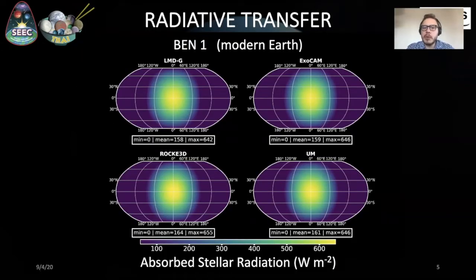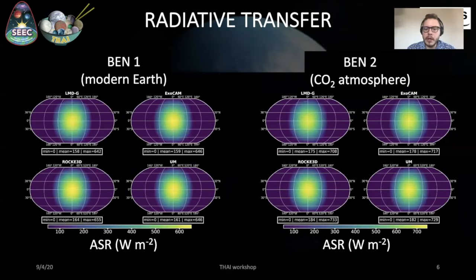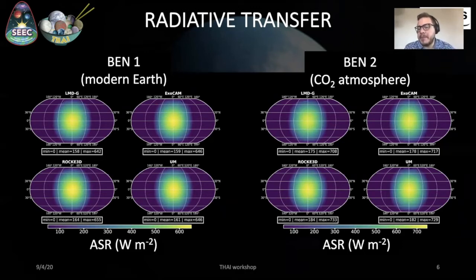Now let's show some results, starting with the BN1 cases. This plot shows contour maps for the four GCMs — LMDG, Exocam, UM, and Rocky 3D — of the absorbed stellar radiation. You can observe that the amplitude and shape of the distribution of the absorbed stellar radiation is very similar from one GCM to the other, by a difference of only a few watts per square meter. The results are also very similar for the BN2 case, where again shape and value of the absorbed stellar radiation are quite similar, which is the first kind of validation that the radiative transfer component gives pretty similar results from one GCM to the other.